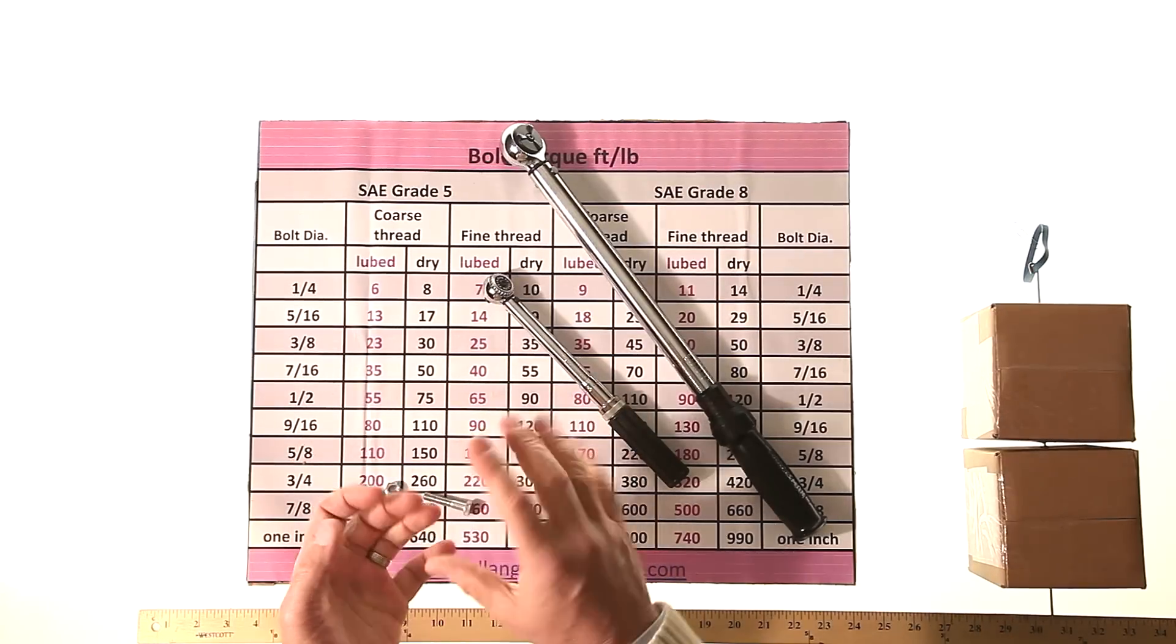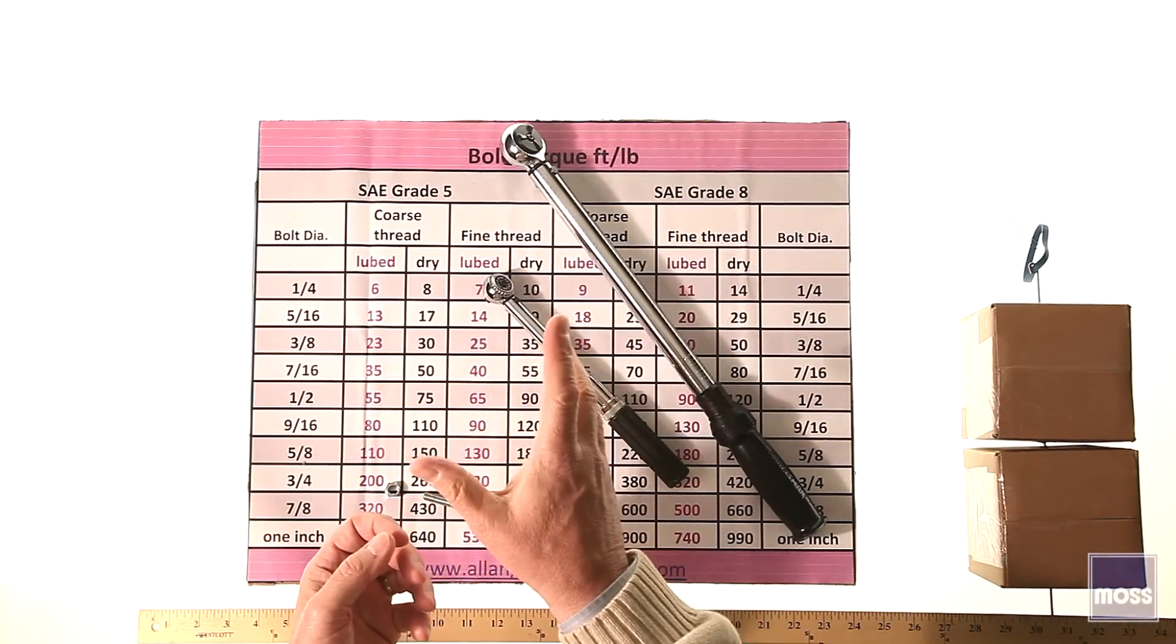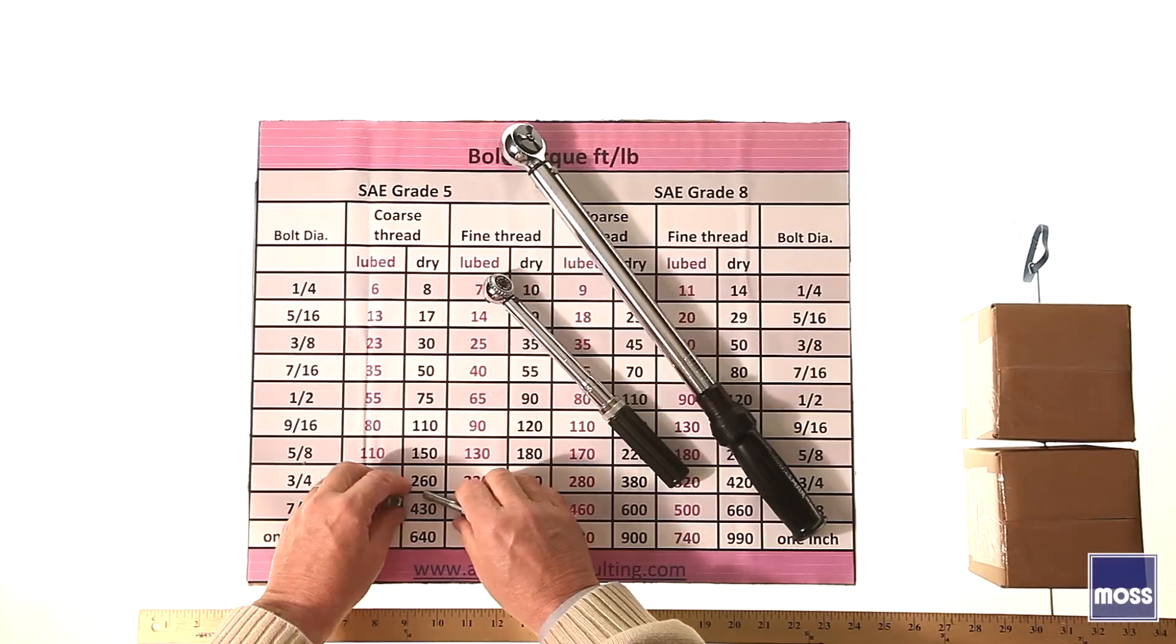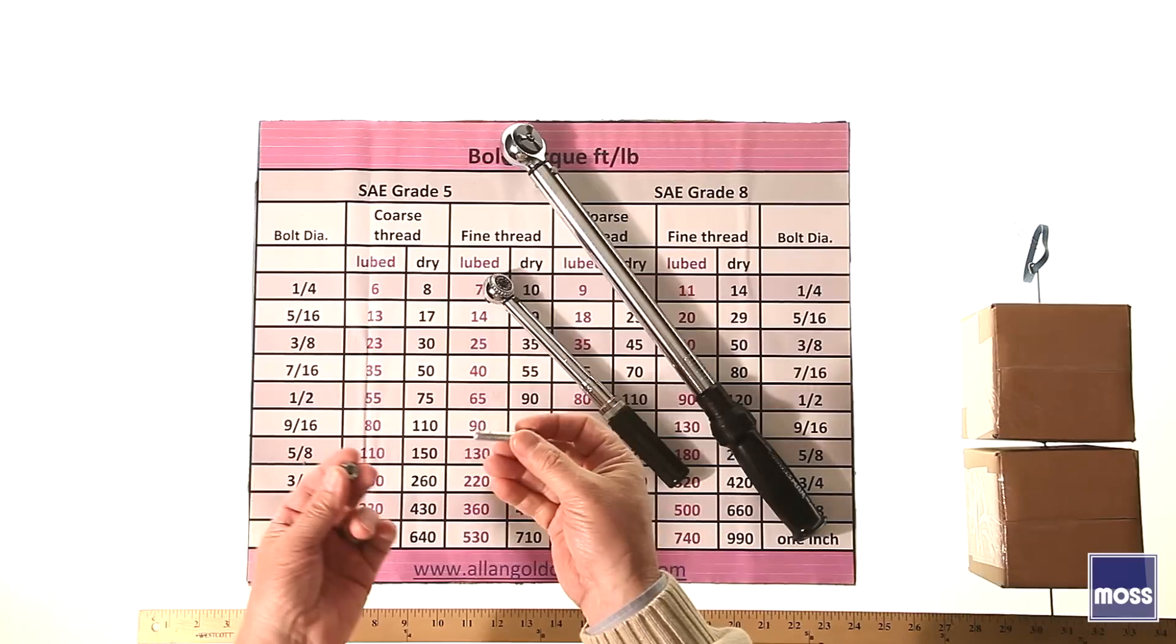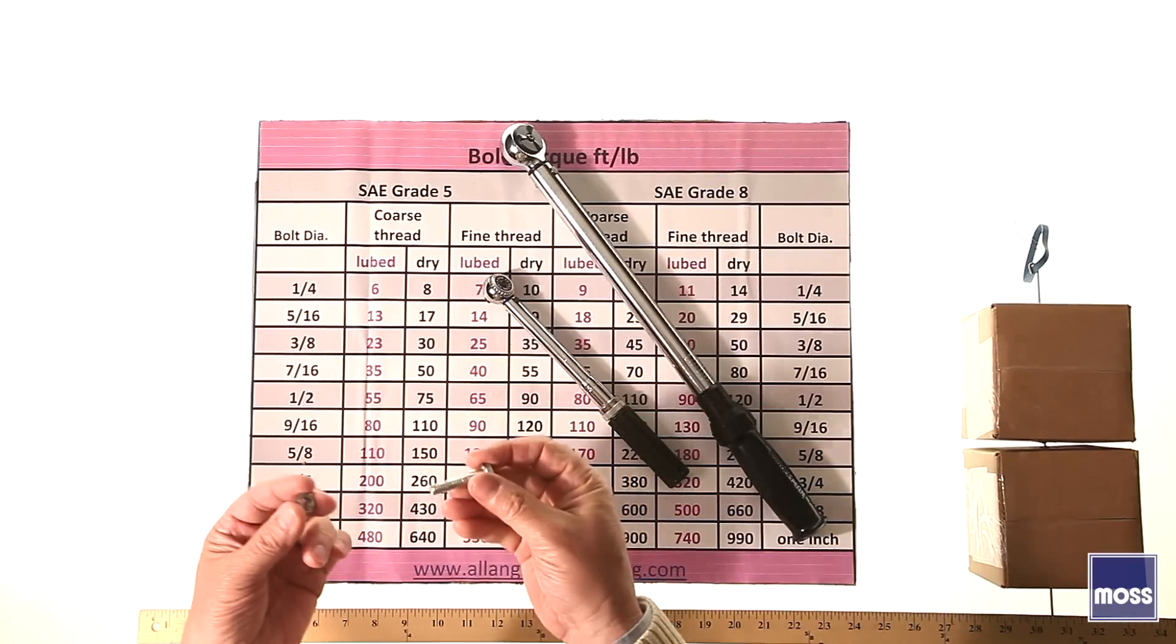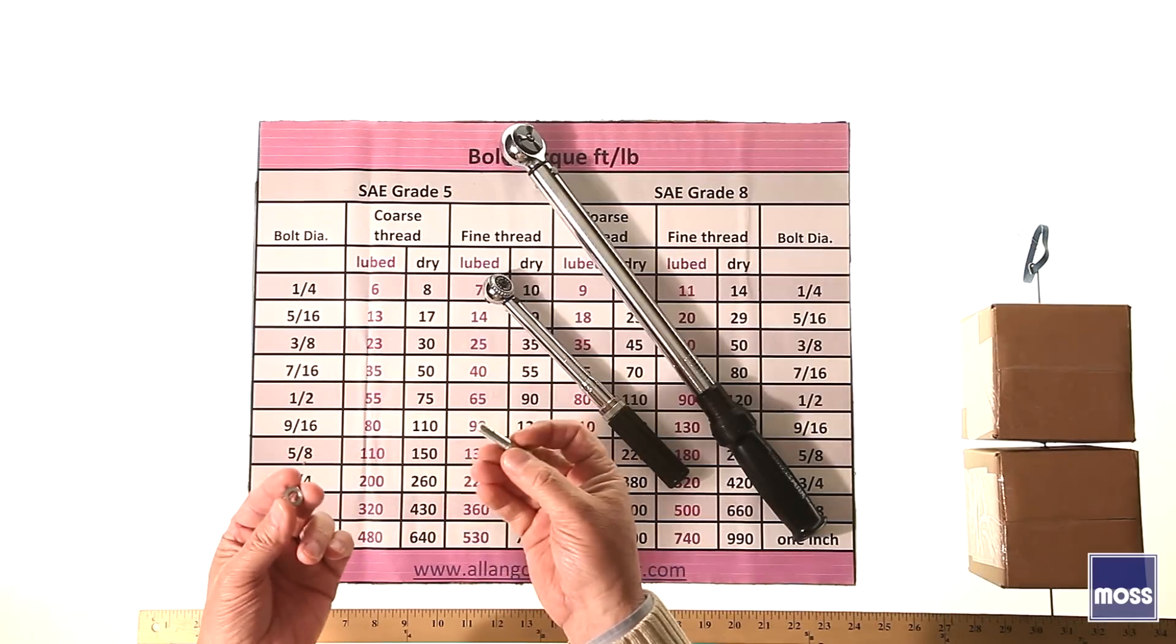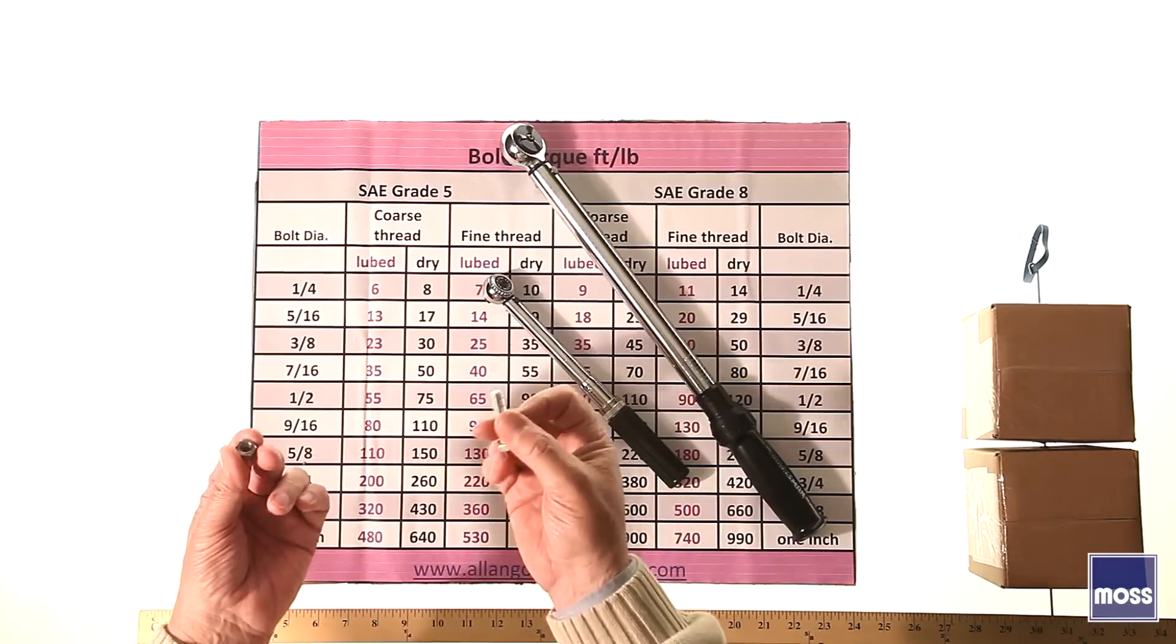Torque comes from the Latin word torquere, and it means to twist. We talk about nuts and bolts in our cars. In the world of engineering, they talk about fasteners. It's all the same thing. When we talk about nuts and bolts and fasteners, we talk about torque and torque specifications.